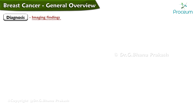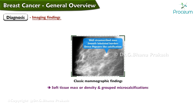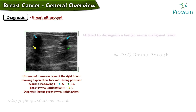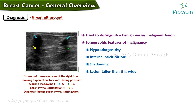Classic mammographic findings of breast cancer include the presence of a soft tissue mass or density and grouped microcalcifications. Breast ultrasound is often used to distinguish benign from malignant lesions. Sonographic features of malignancy include hypoechogenicity, internal calcifications, shadowing, a lesion taller than it is wide, and spiculated, indistinct, or angular margins.